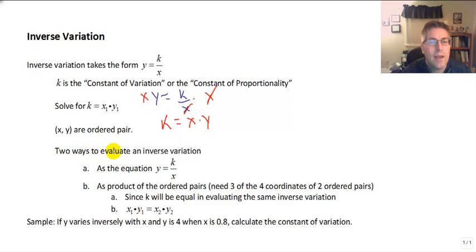There's two ways to evaluate an inverse variation. We can use the equation y equals k over x and substitute two of the three things and solve for the third. Or we can solve as the product of the two ordered pairs we're working with.